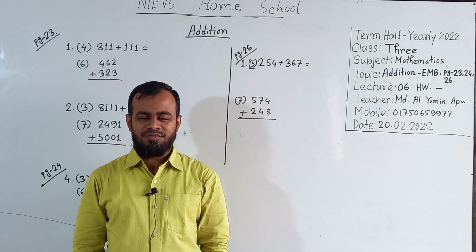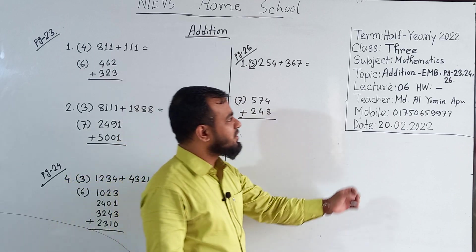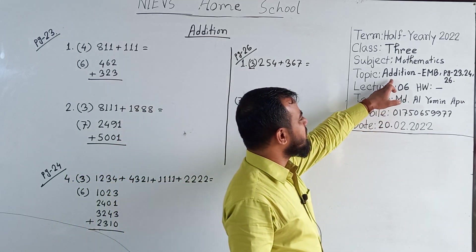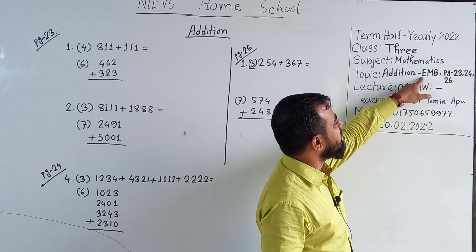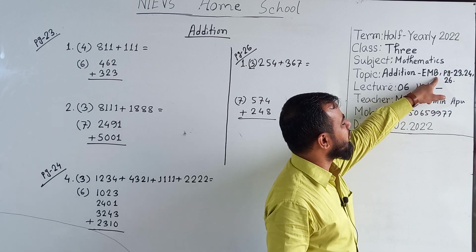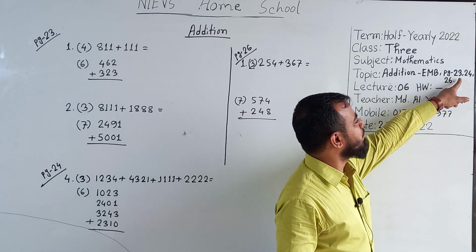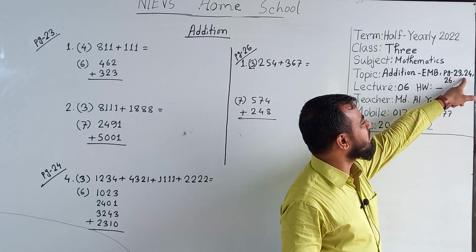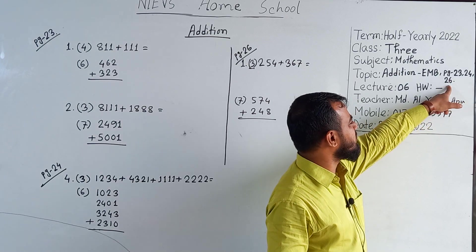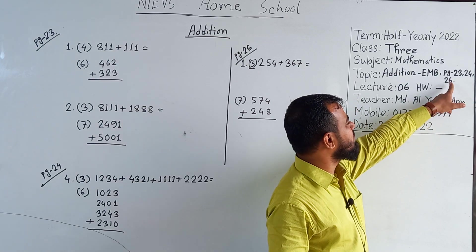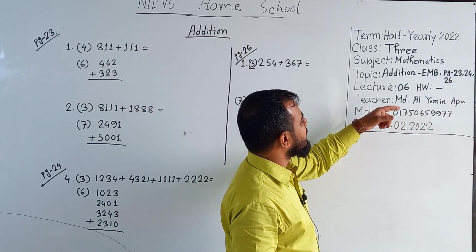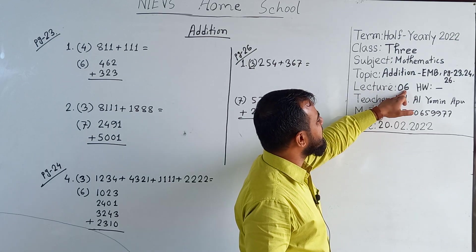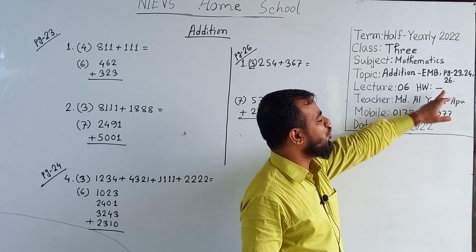Today I'm going to take a math class for the students of Class 3. Our today's topic is addition. It's EMB — EMB means Elementary Mathematics Book — that means it's a board book. Page number 23, 24, and 26. From these 3 pages, we'll solve some addition problems. So your lecture number is 6, and you have no homework today.